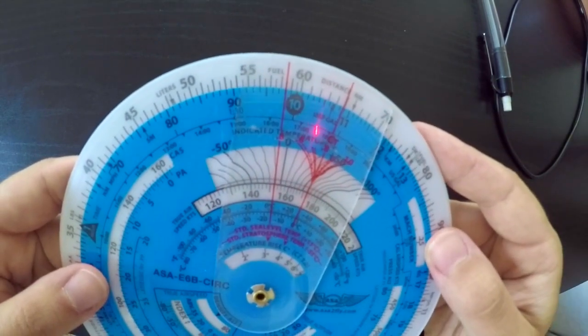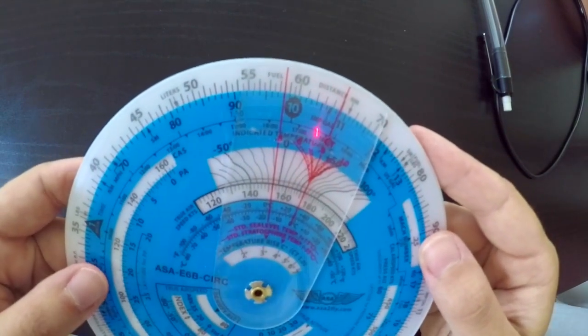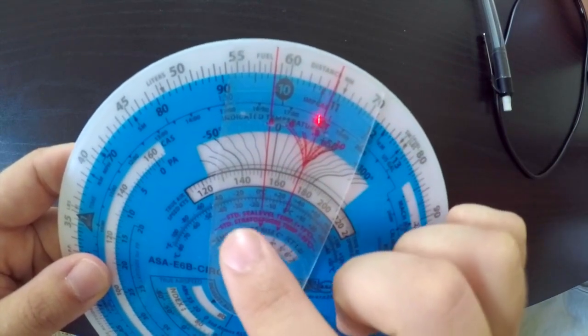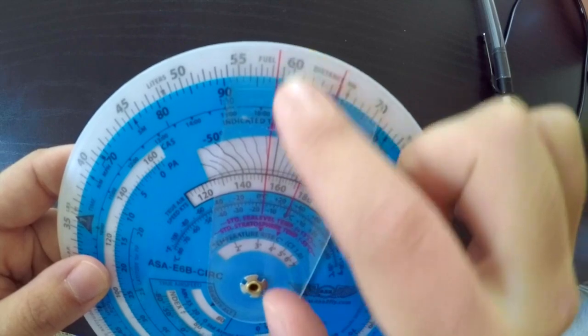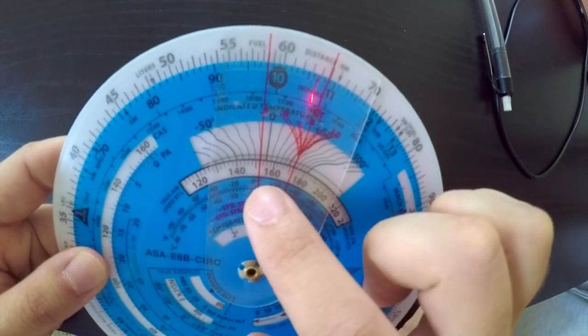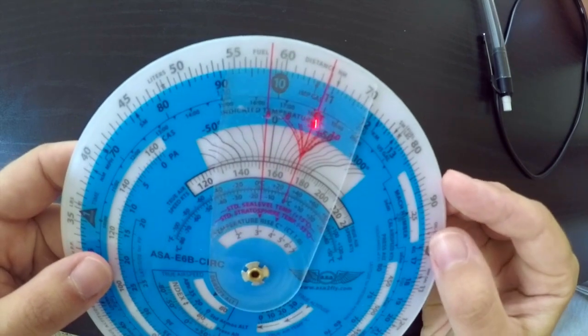And now this red line is aligned with negative 10 degrees Celsius. We said our true airspeed was 152 knots, so we track down here, and we have to make sure that 152 is also on this line, which it is right now. So you have 140, 150, 152. Now once this is aligned,